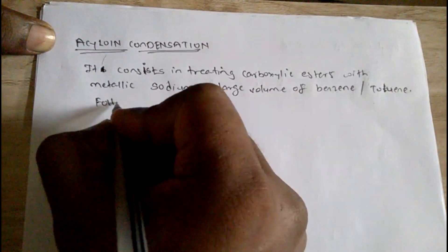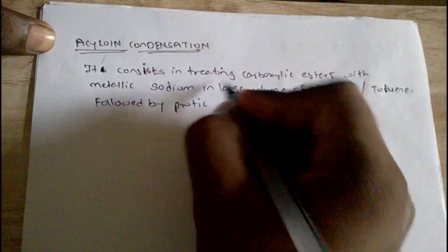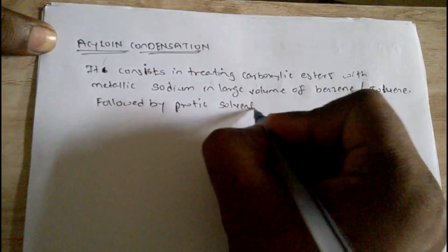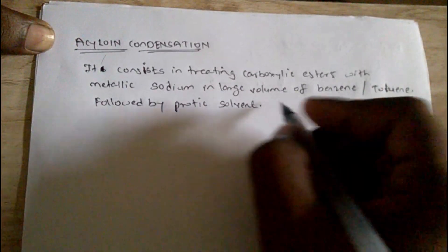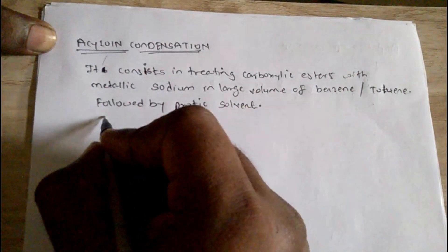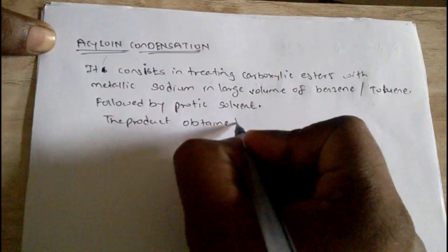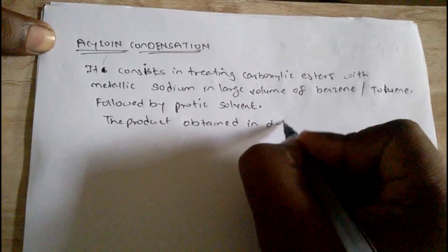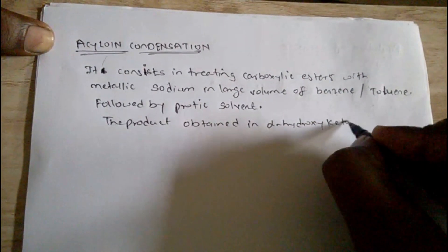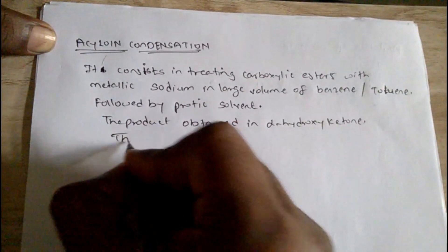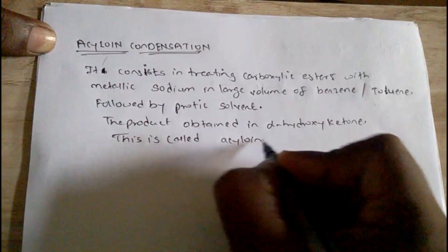Followed by a product workup. The product obtained is an alpha-hydroxy ketone, and this is called an Acyloin condensation.